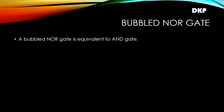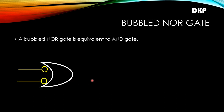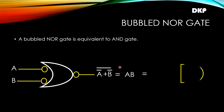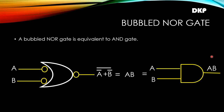Now let us see how the bubbled NOR gate is equivalent to an AND gate. In the logic symbol of the bubbled NOR gate, you are applying inverted inputs to both terminals of the OR gate. If you give a and b as the input, the output will be (a-bar + b-bar)-bar = a · b, which is equal to the AND gate with two inputs and one output. So the output from the bubbled NOR gate equals a · b, which is the same as the AND gate output. Therefore, a bubbled NOR gate is equivalent to an AND gate.